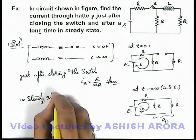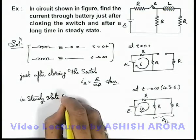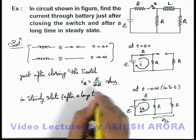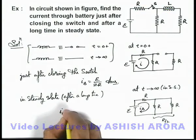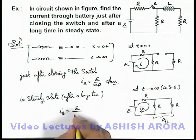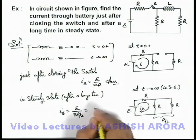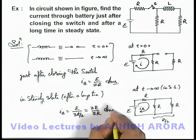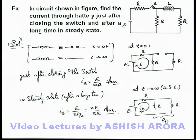In steady state, that is after a long time, if we calculate the current through battery it is e divided by the total resistance will be r plus r by 2 that is 3r by 2. So the current will be 2e by 3r, that will be the answer to this problem for steady state current through battery.